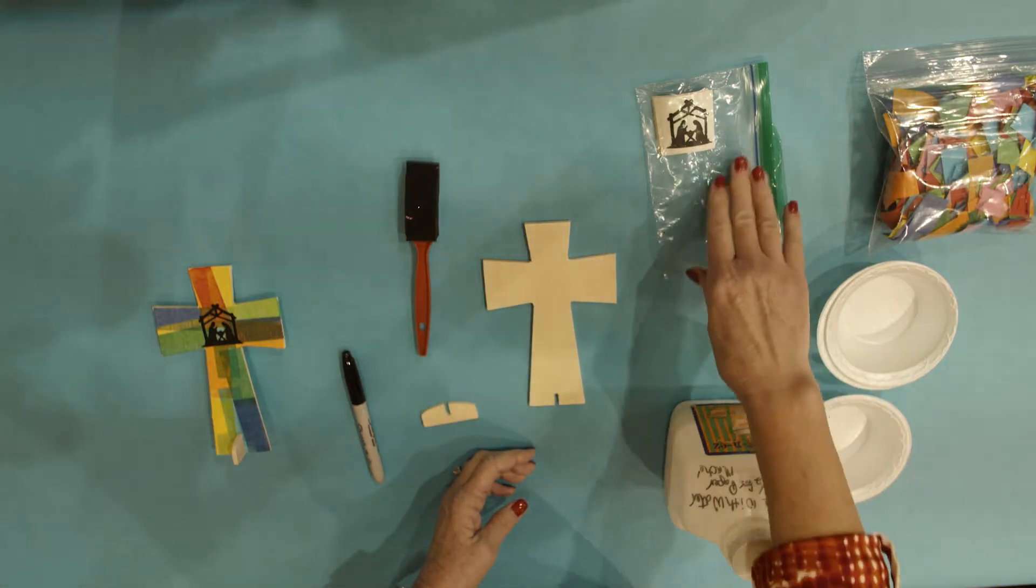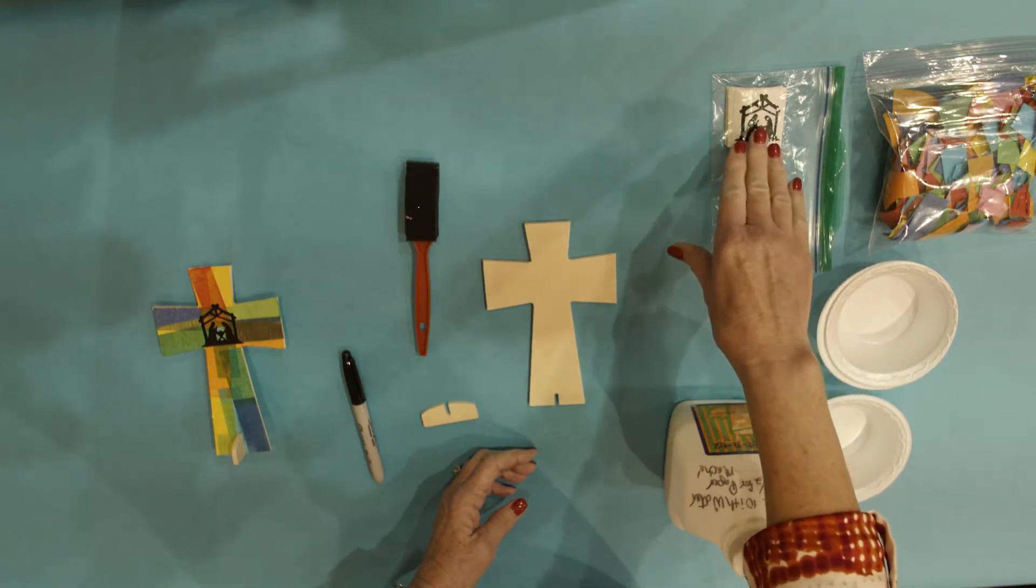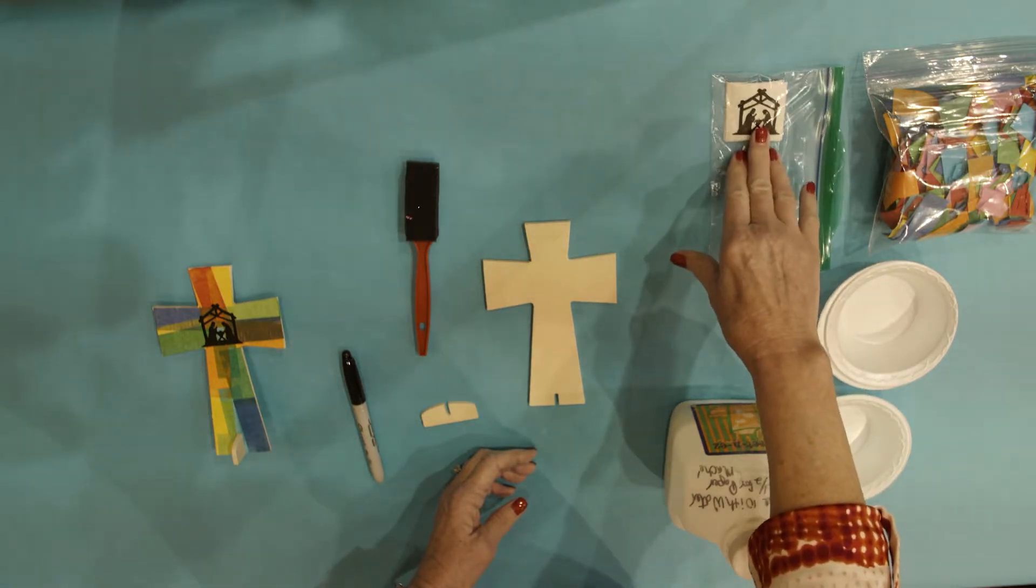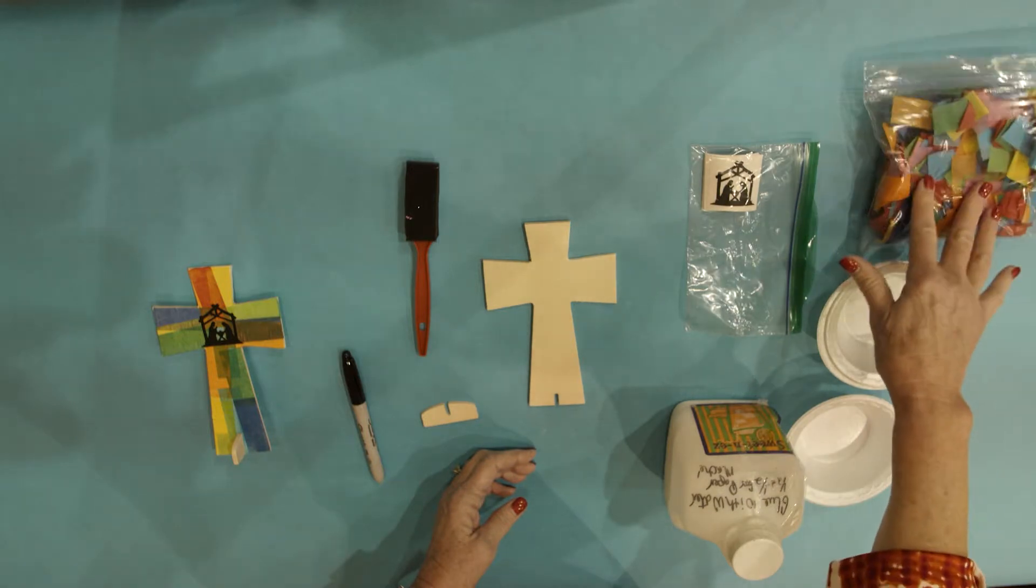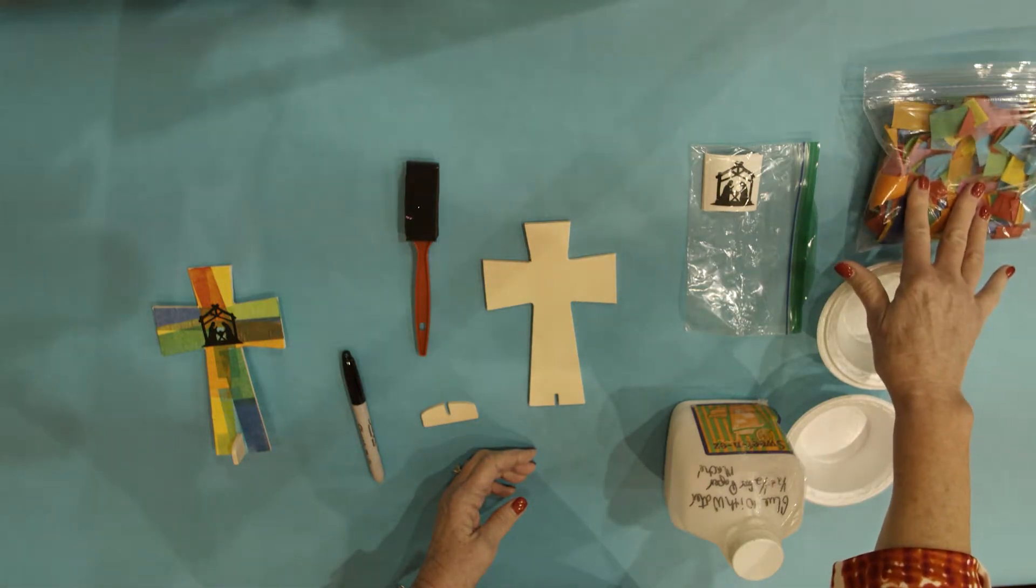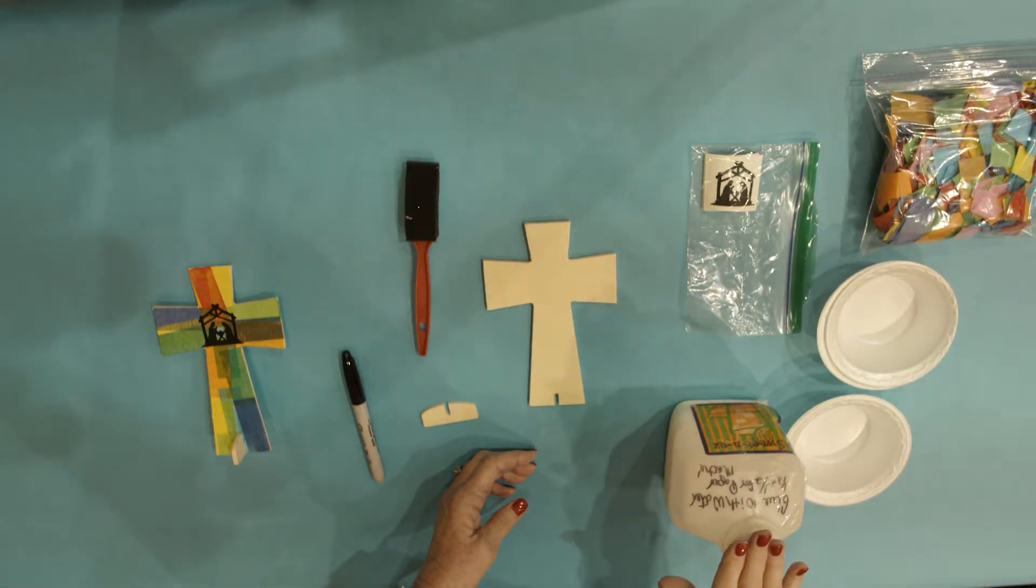And then you will have a zip lock with the nativity stickers in it, the tissue, and then a container of the glue.